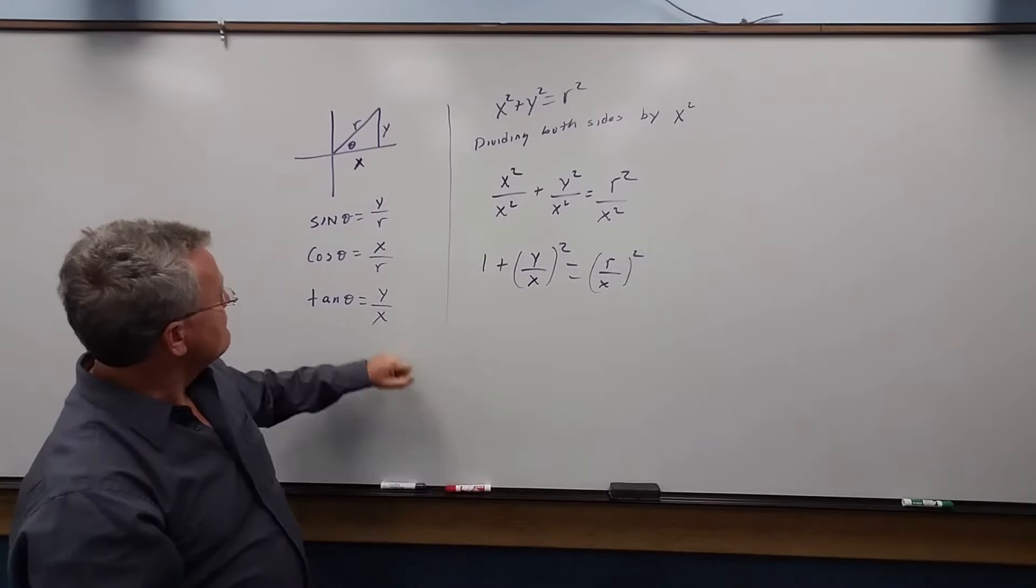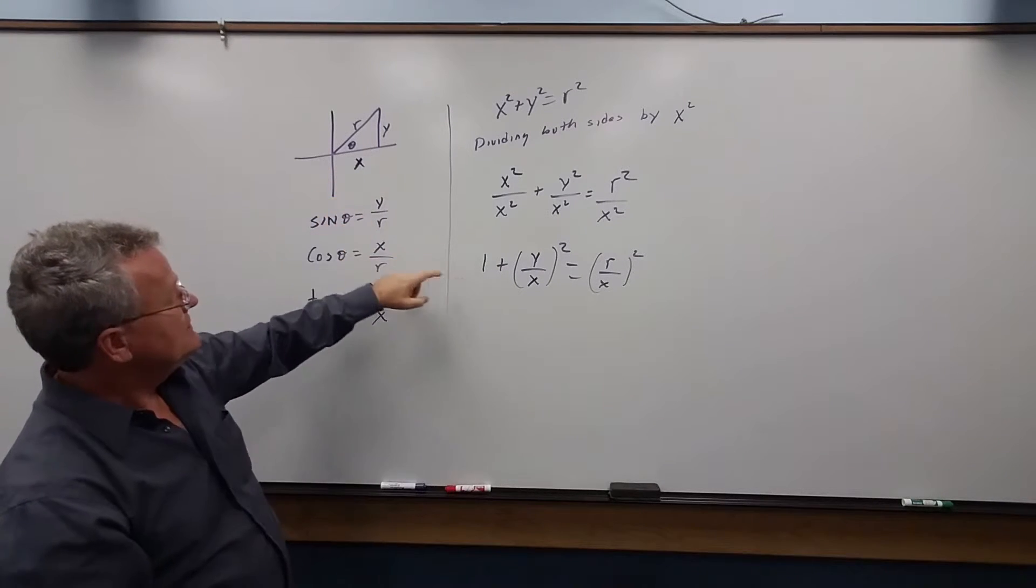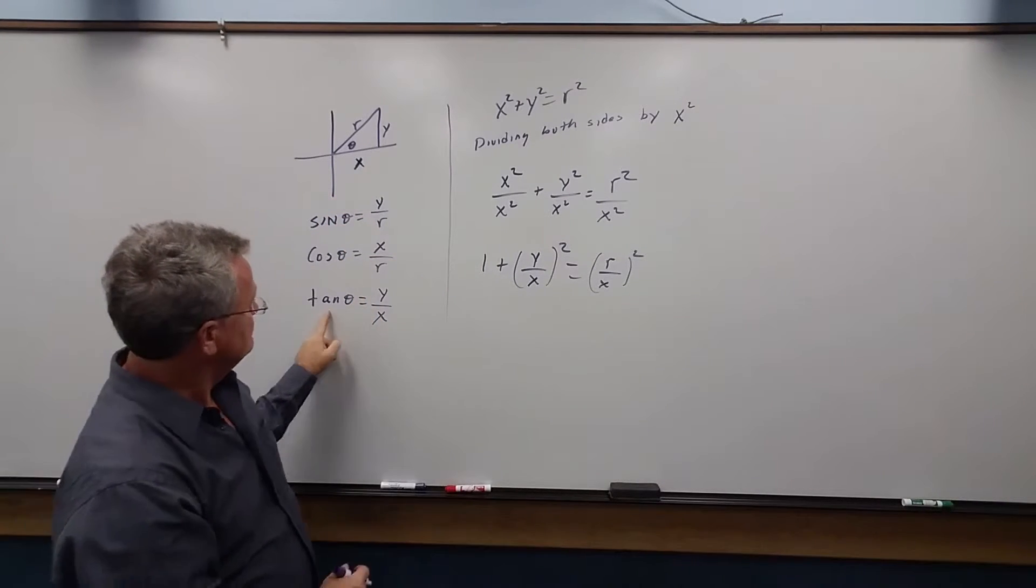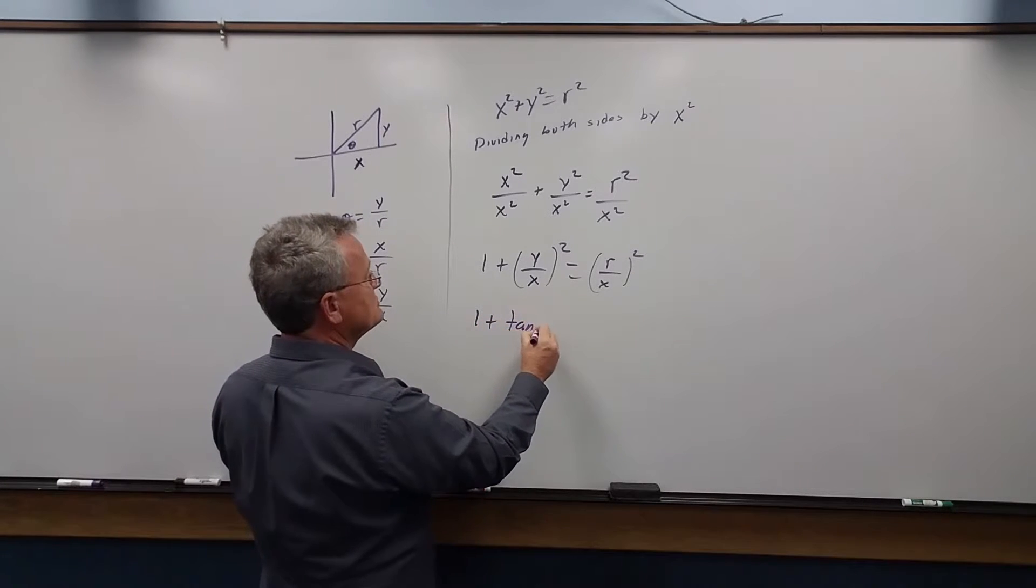Well, what is y over x? y over x is tangent, so this is 1 plus tangent squared.